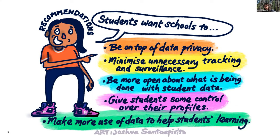The fourth recommendation is to give students control over their profiles and allow them to represent themselves their way. This may include access to their profile so they can add a pseudonym or change certain pieces of data such as their photo to better represent who they feel they are. Students should also be able to choose which pieces of data are visible — for instance, some students expressed that they wanted their profiles to include their interests so their online identity at school wasn't so 'schoolified.'